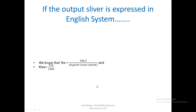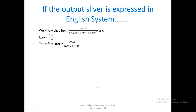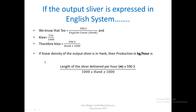There was one more problem requiring revision of formulas. Tex equals 590.5 divided by English count; kilotex equals tex divided by 1000; and kilotex equals 590.5 divided by hank into 1000. To use the earlier production formula when sliver is expressed in hank, replace kilotex by 590.5 divided by hank times 1000. This gives the new production formula when delivered sliver is expressed in hank.